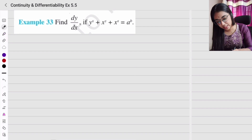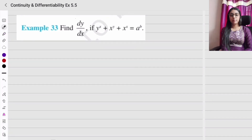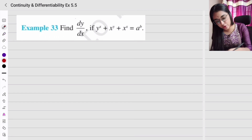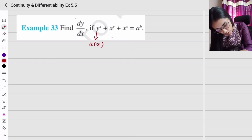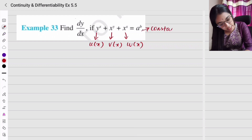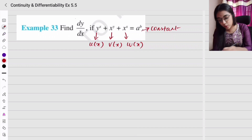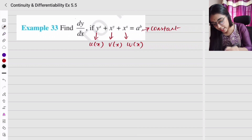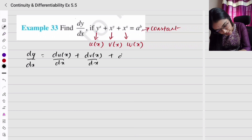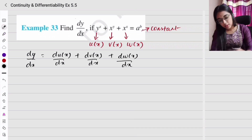Next, Example 33: We need to find dy/dx, but we have three different functions. So we take u(x), v(x), and w(x) as the three separate functions. The LHS is a constant, so differentiating gives 0. Therefore dy/dx = du/dx + dv/dx + dw/dx.